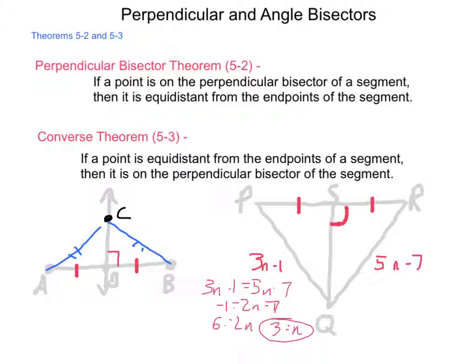That tells us the value of the variable. However, we were looking for that distance. So, substituting it in, 3 times 3 is 9 minus 1, gives us a length of 8 for PQ. And on the other side, 3 times 5 is 15 minus 7 is 8 for RQ. So they are equidistant from the endpoints of the line segment.